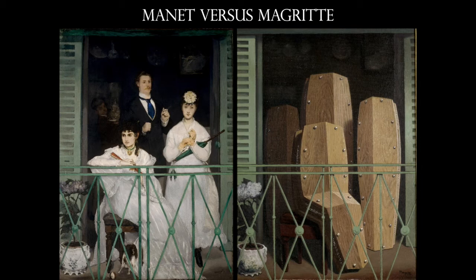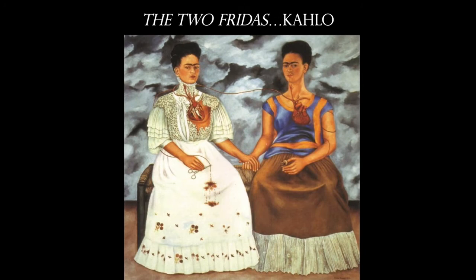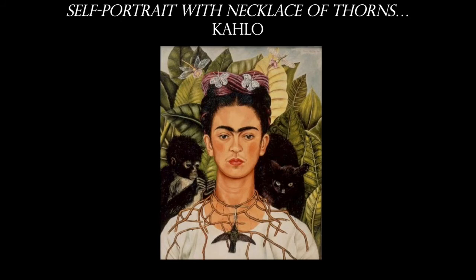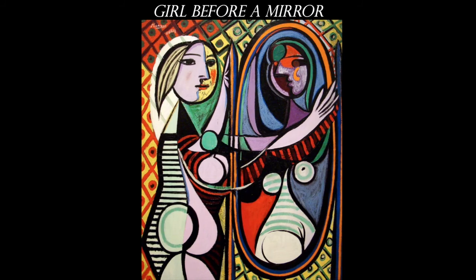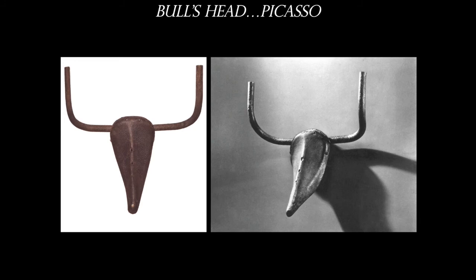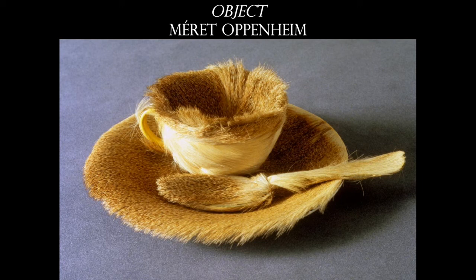Magritte would also go through art history and take famous works — one by Manet — and place all the individuals in coffins. Surrealism is also where I would place Frida Kahlo. Even Picasso — though he didn't know he was a Surrealist — was told by André Breton that he was one. Girl Before a Mirror is very much in the Surrealist style. We'll talk about Picasso in his own lecture later in the semester. Meret Oppenheim's Object is also placed here — from the Pattern and Texture lecture, where this is Subversive Texture.